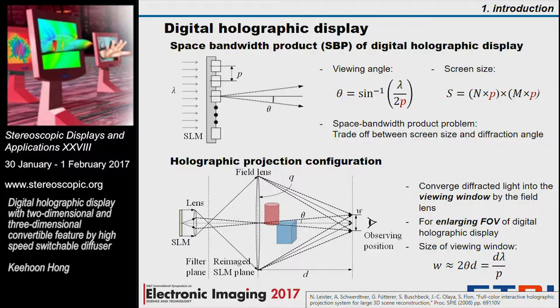One way to overcome this space bandwidth product limitation is a holographic projection configuration, which forms a viewing window by a field lens. It converges the diffracted light of the SLM into a certain position, so the field of view of the holographic display can be enlarged without decreasing the screen size. But the observable area will be limited by this equation.